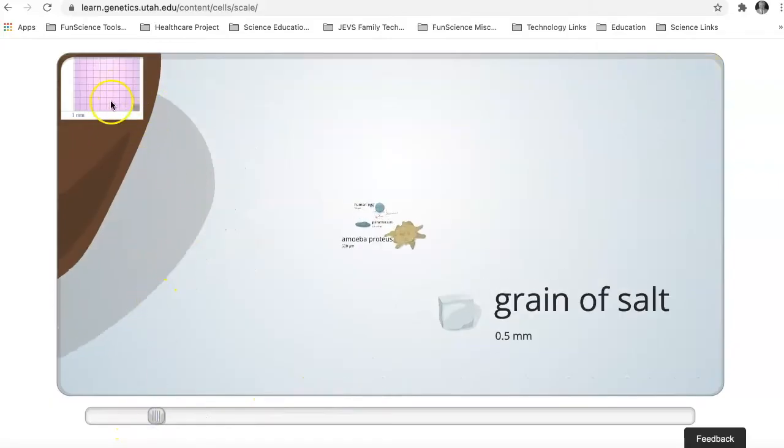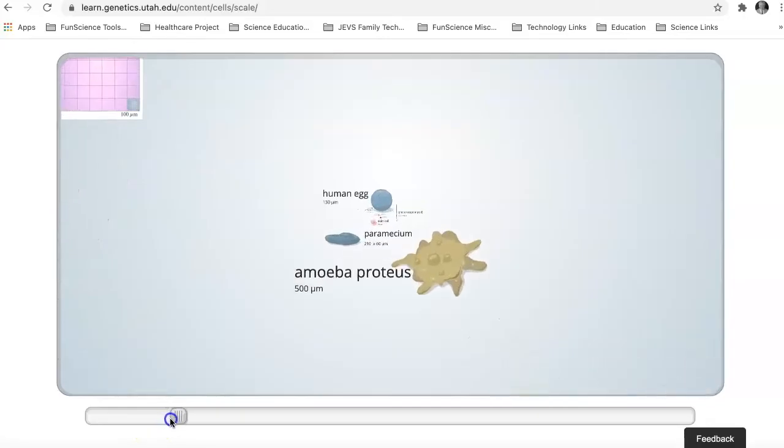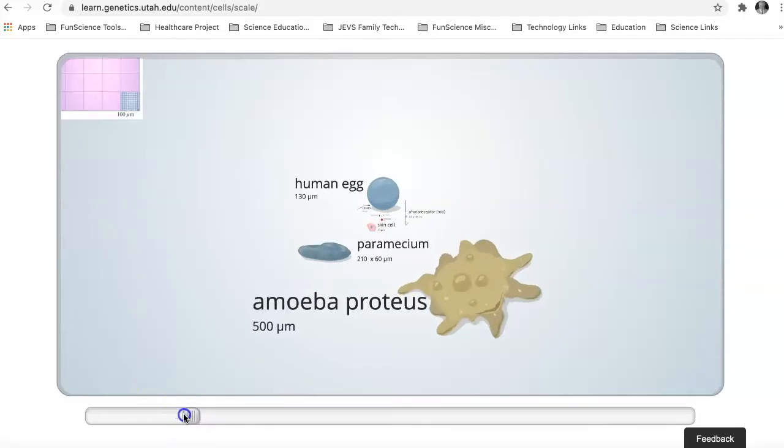Pretty soon, we're going to be so small that we can't use a millimeter anymore. We start using a unit called microns or micrometers. We take one millimeter, we divide it by a thousand, and that's a micron. So let's keep going down. Now we're in microns.